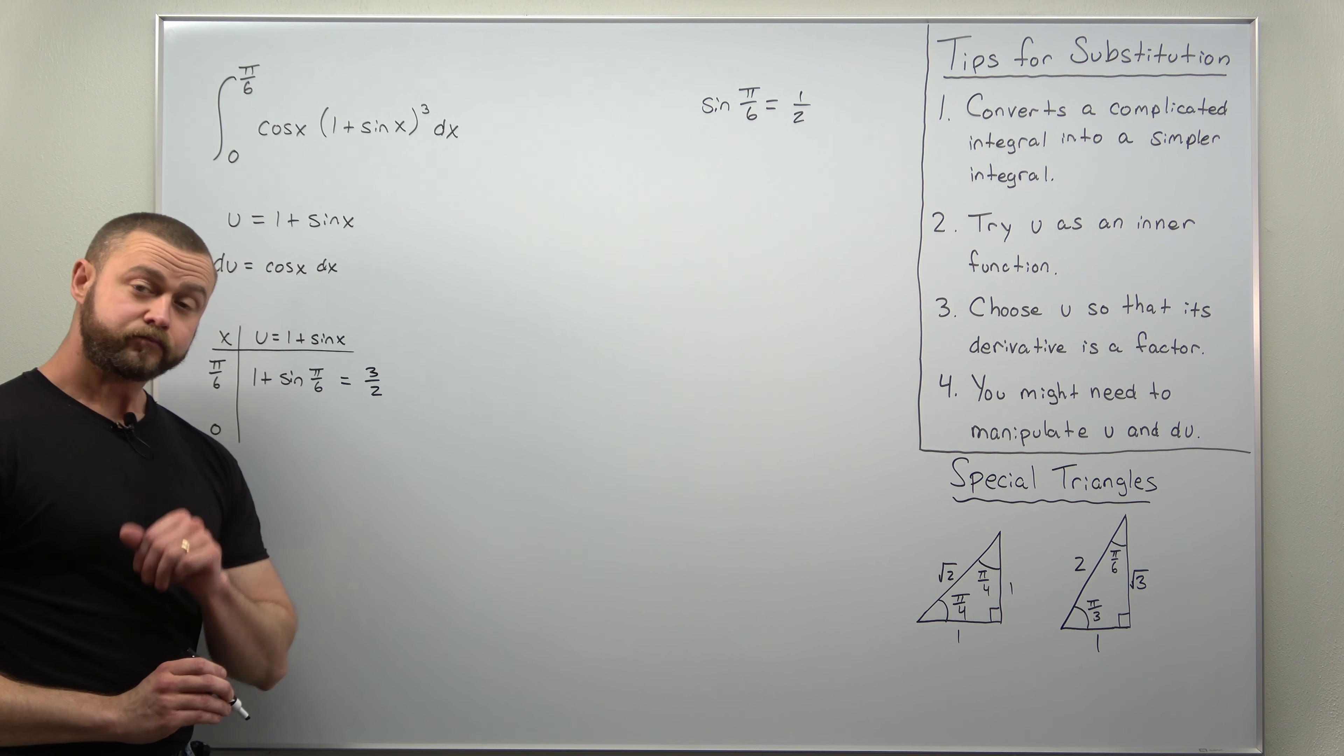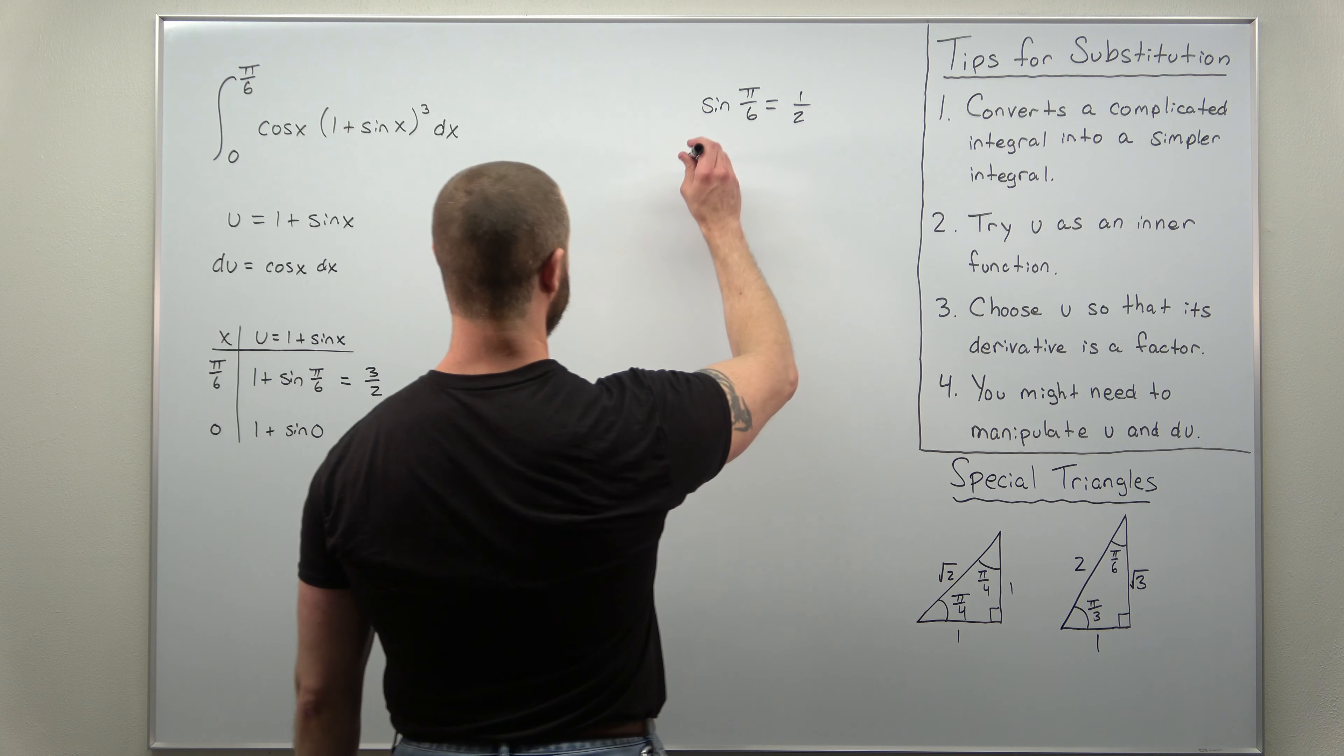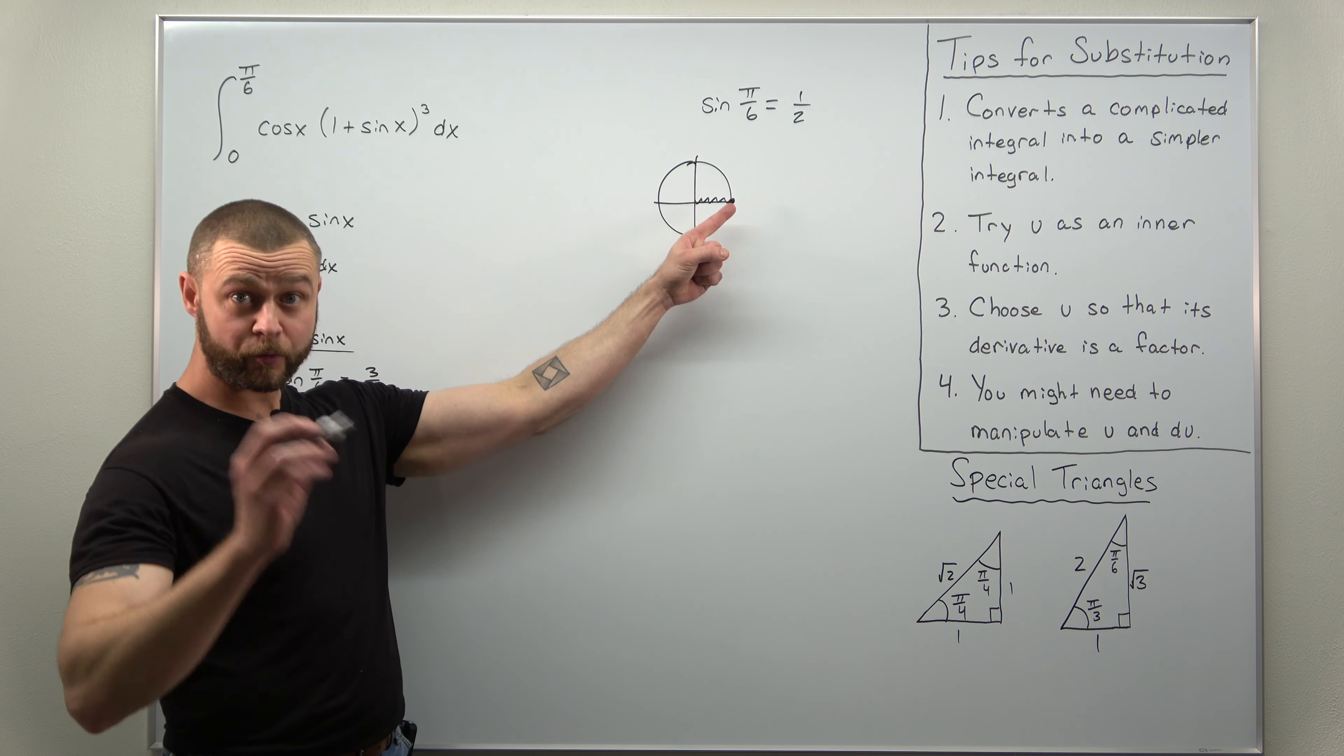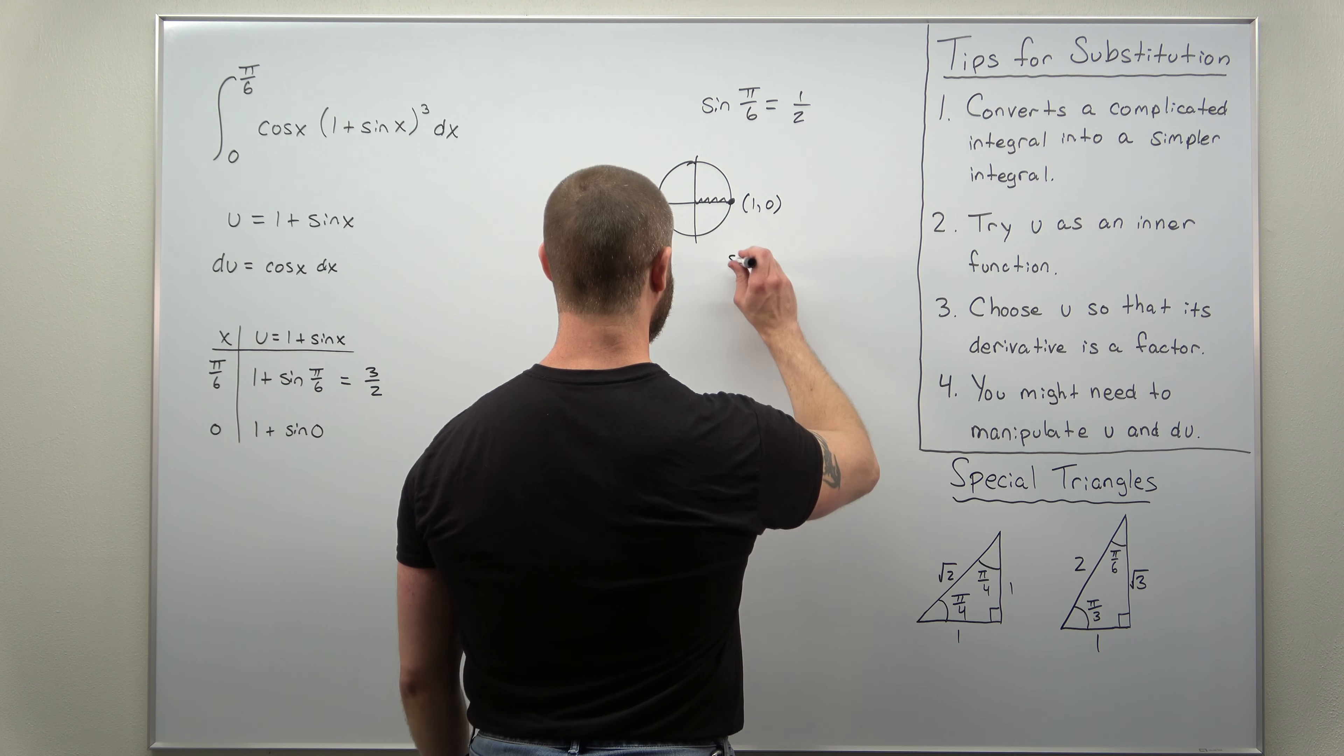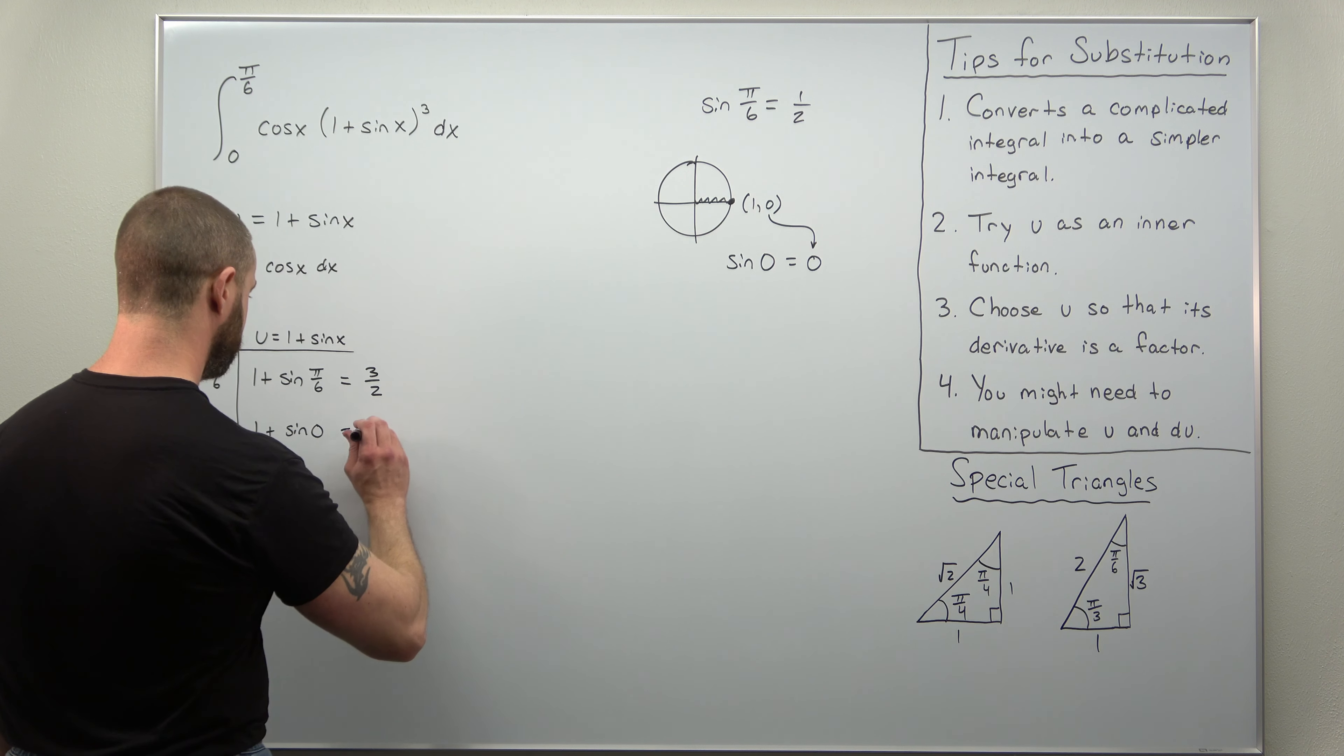Now when we plug in zero, we get 1 plus sine of zero. If you think back here, sine of zero - if we think of that on a basic unit circle, remember zero is your angle in radians so you have no rotation. That point corresponds to 1 comma 0 on the unit circle, and sine always goes with the y coordinate. So sine of the angle zero equals the y coordinate zero. So sine of zero is zero, one plus zero is just one.